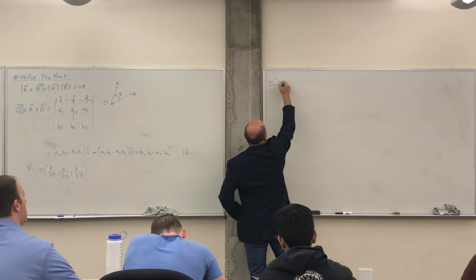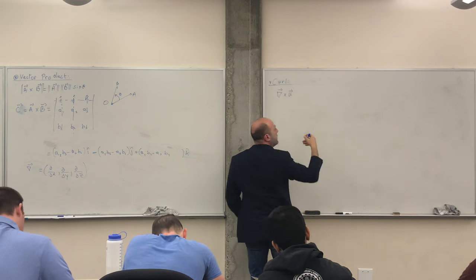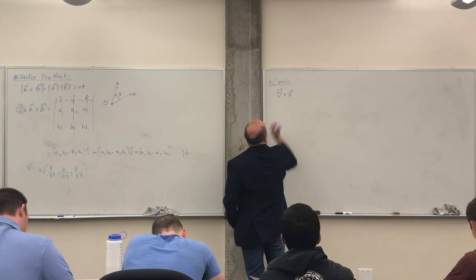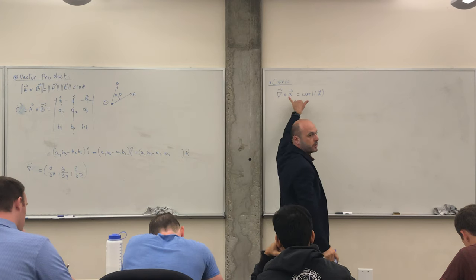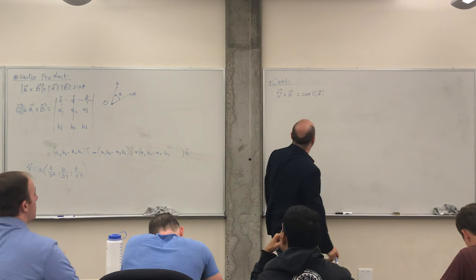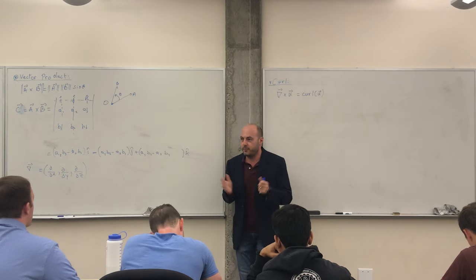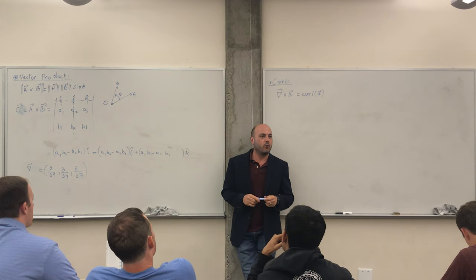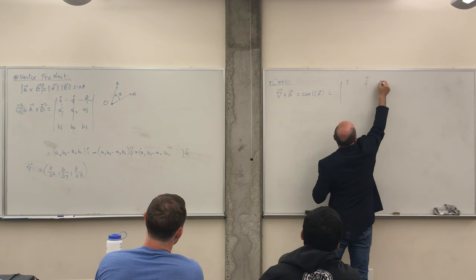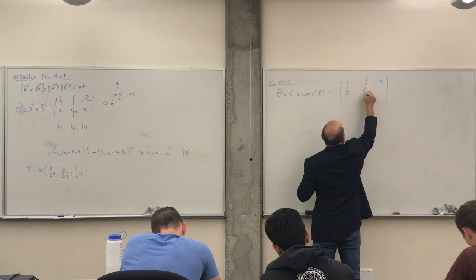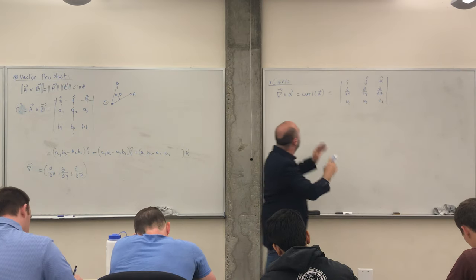The curl is simply the cross product of nabla and some vector u. I keep using u to reinforce that this is a velocity field. It's also written as curl u. You'll see an interchange of notation in homework and problems. Mechanically, you can compute it using the same determinant form with i, j, k in the first row, d/dx, d/dy, d/dz in the second, and u1, u2, u3 in the third — giving you a vector.